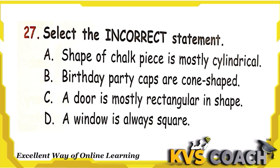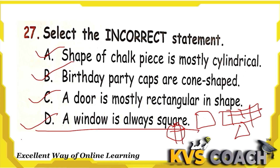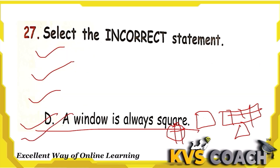The next question: select the incorrect statement. Option A — chalk piece is mostly cylindrical: correct. Option B — birthday party caps are cone-shaped: correct. Option C — a door is mostly rectangular: correct. Option D — a window is always square: this is wrong. A window can be rectangular, circular, or any shape. So option D is the incorrect statement. Option D is the right answer.